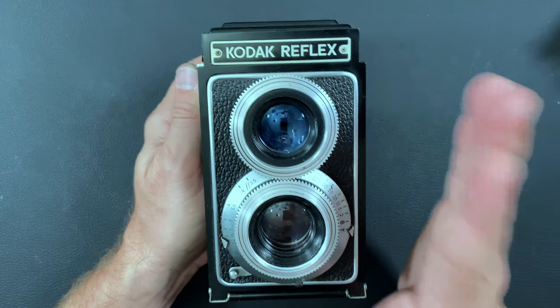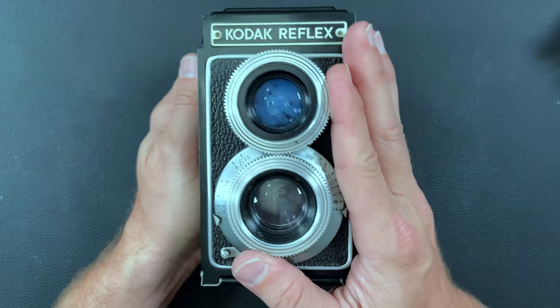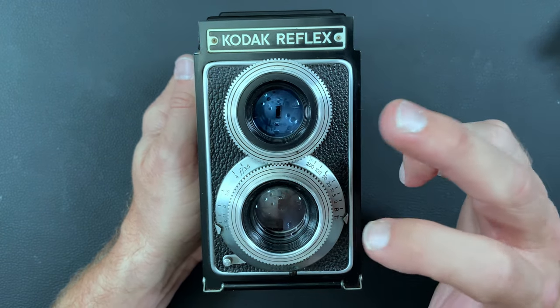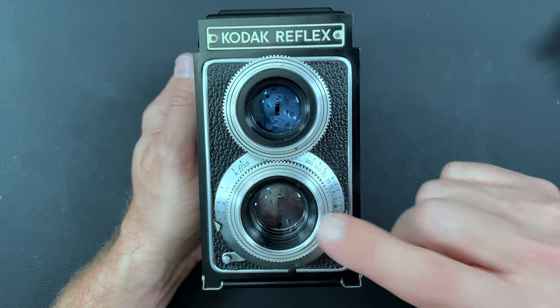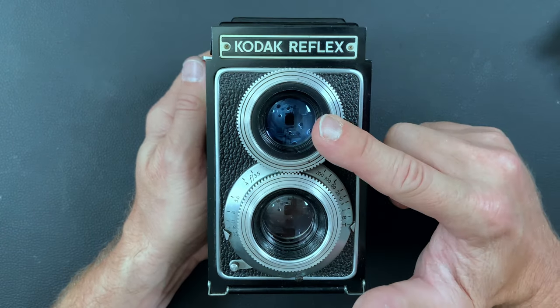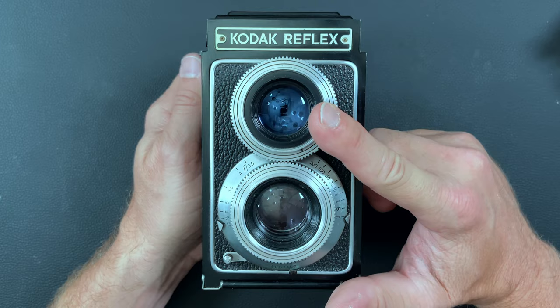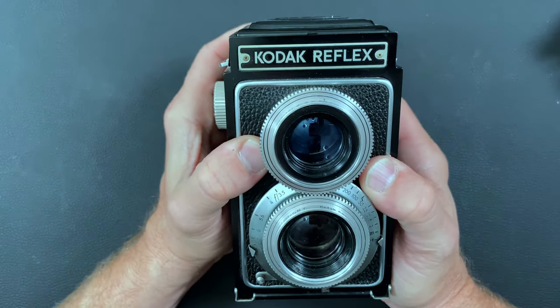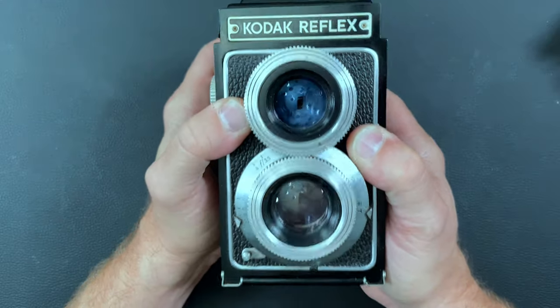This is a true twin lens reflex camera, which means that it had two lenses. This one was for the film and this one was for the viewfinder. This camera was made from 1946 to 1949.